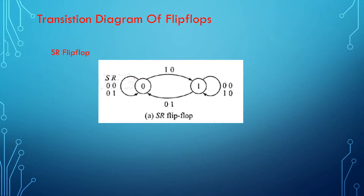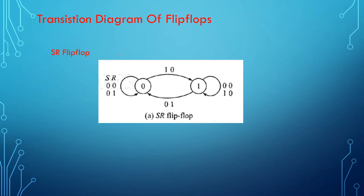Hello everyone, welcome back to the next session of videos on transition diagrams of flip-flops. In the previous video sessions, we studied a lot about the ways in which a flip-flop can be represented — using block diagram, circuit diagram, IEEE symbol diagram, or by using a characteristic equation. This topic is an advanced version of the characteristic equation, or we can say it is one more alternate way to represent a flip-flop.